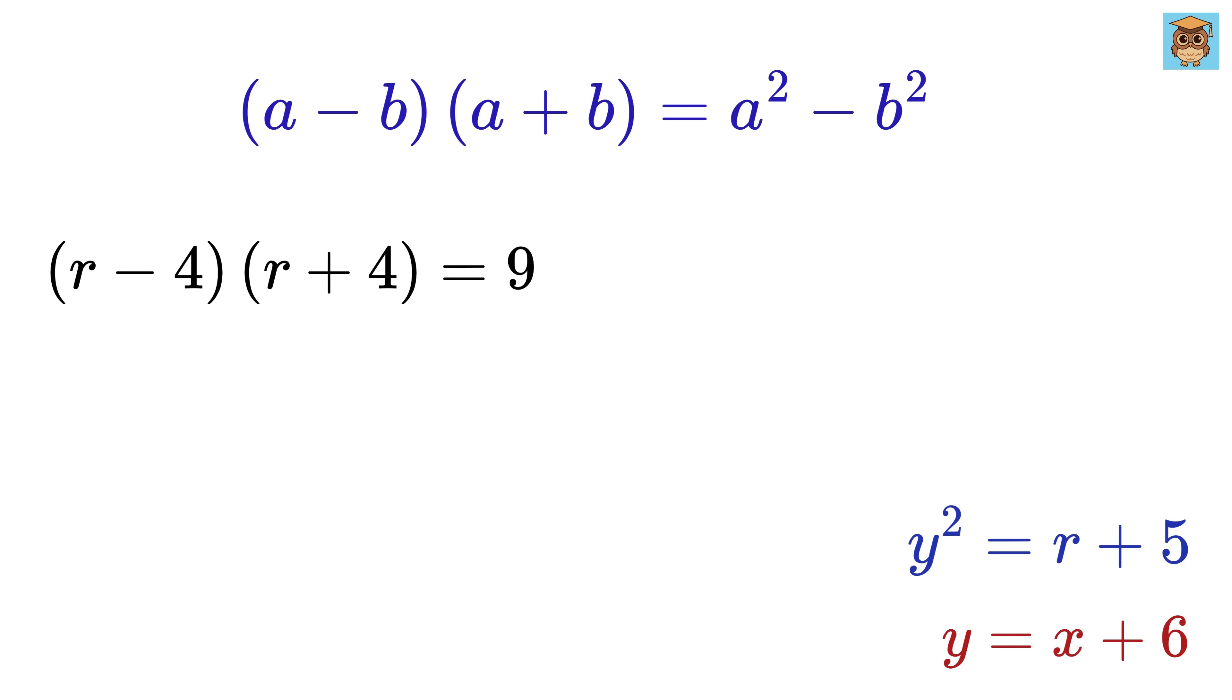And thus this will become r squared minus 4 squared, or r squared minus 16, which equals 9. Thus r squared equals 16 plus 9, or 25, and therefore r equals plus or minus 5.